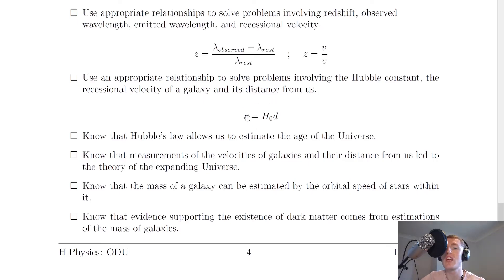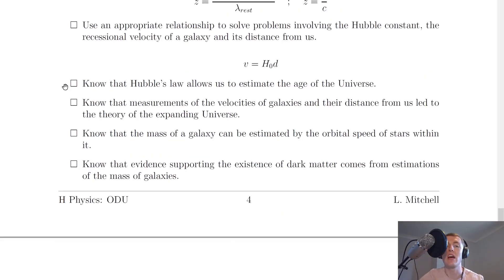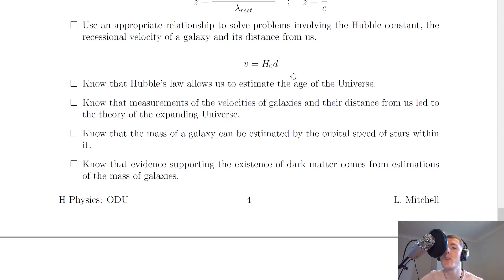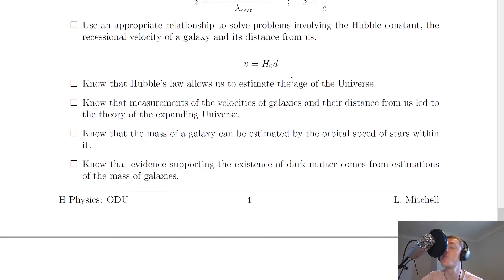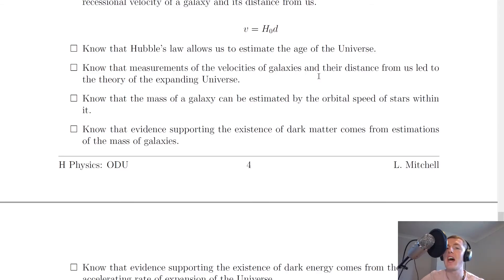Moving on, it says to use an appropriate relationship to solve problems involving the Hubble constant, the recessional velocity of a galaxy, and its distance from us. The equation is v = H₀d. Next, you should know that Hubble's law allows us to estimate the age of the universe — rearranging speed, distance, and time gives t = d / v = 1 / H₀, so the age of the universe is estimated as t = 1 / H₀.